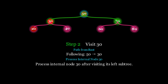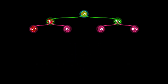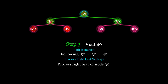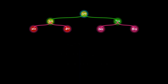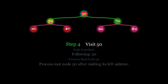Next we backtrack to node 30. Since we have already visited its left subtree, we process node 30. Now we move to the right child of 30, which is 40, and since 40 has no children we process it next. Next we backtrack to the root 50, and since we have visited the left subtree we process node 50.